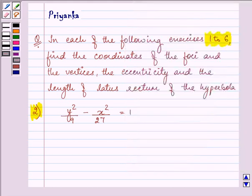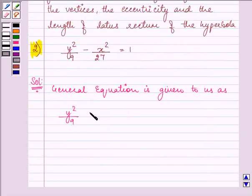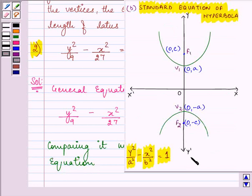Now, we have the general equation is given to us as y square by 9 minus x square by 27 is equal to 1. Now, I am comparing it with the standard equation, which is discussed in this diagram, which is y square by a square minus x square by b square is equal to 1.